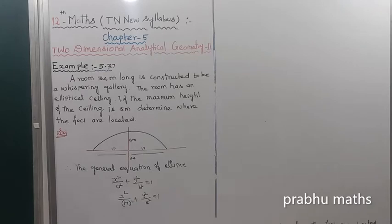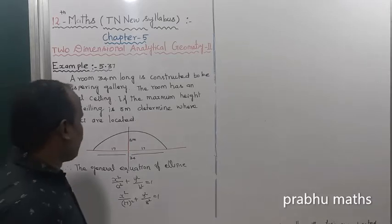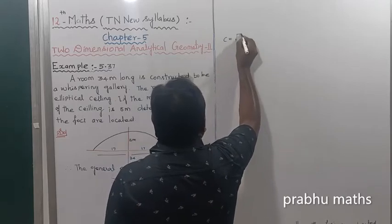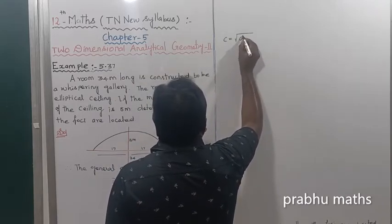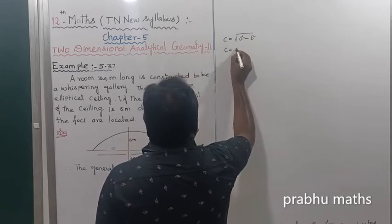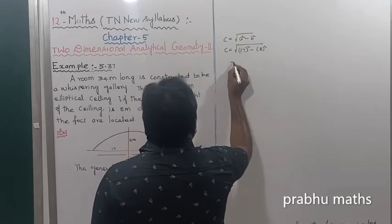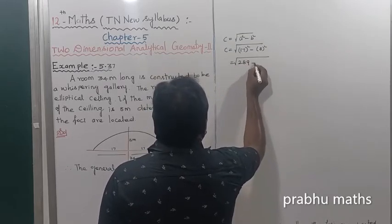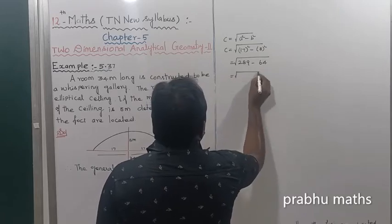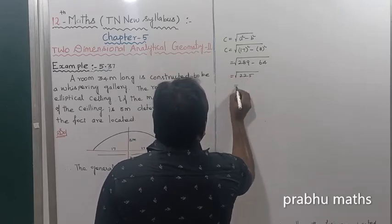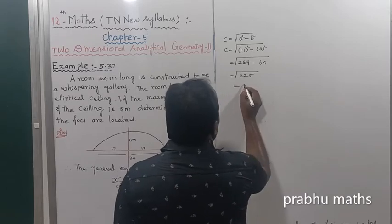To find the focus, the formula is C equals the square root of A squared minus B squared. So C equals the square root of 17 squared minus 8 squared, which is the square root of 289 minus 64, giving us C equals the square root of 225, so C equals 15.